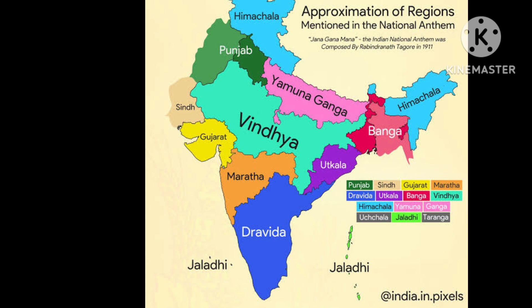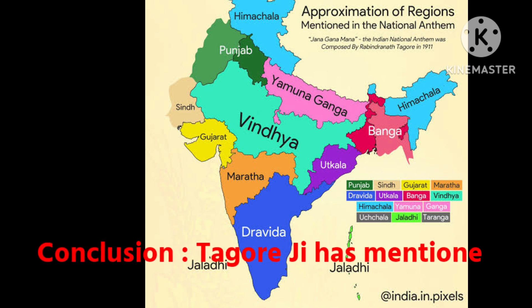Utkala has no specific place name today. Jaladhi refers to Andaman Nicobar and Lakshadweep. Tripura is in Bengal. You can see this map.